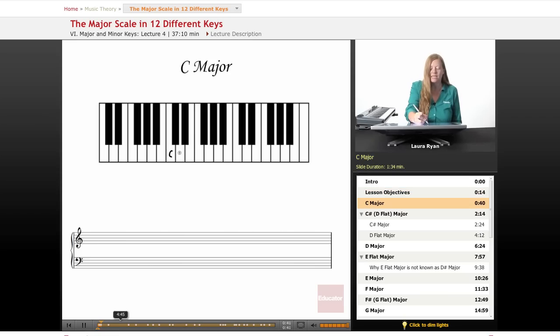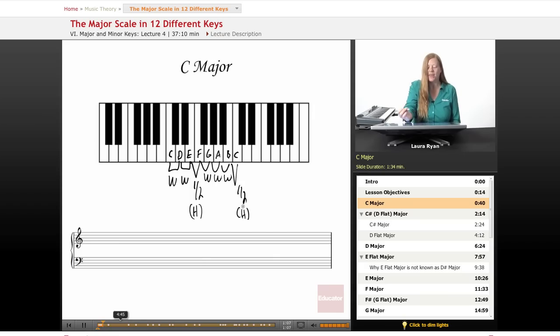Let's identify our scale on the keyboard and remember our pattern. We have a whole step from C to D, whole step from D to E, half step from E to F, F to G is whole, G to A is whole, A to B is whole, B to C is half. So that is whole, whole, half, whole, whole, whole, half.